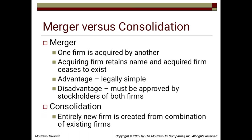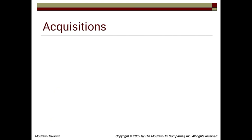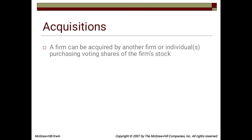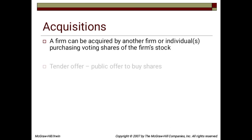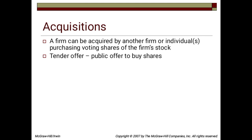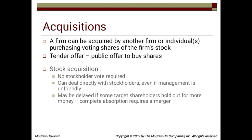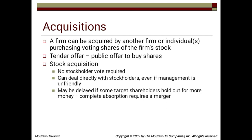Consolidation: an entirely new firm is created from the combination of existing firms. In a stock acquisition, a firm can be acquired by another firm or individual purchasing voting shares of the firm's stock via a tender offer — a public offer to buy shares. No stockholder vote is required, and the acquirer can deal directly with stockholders even if management is unfriendly. However, the process may be delayed if some target shareholders hold out for more money.